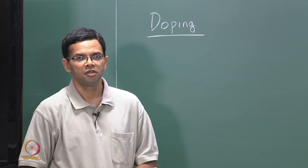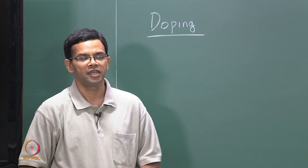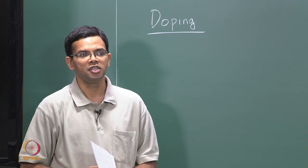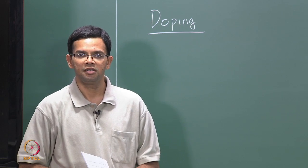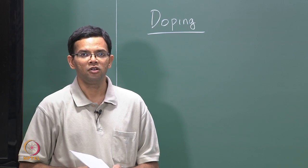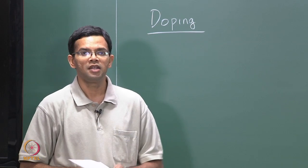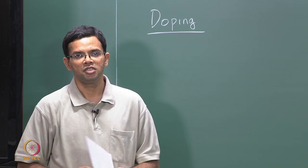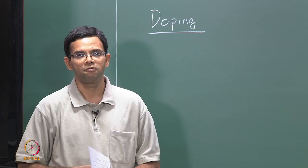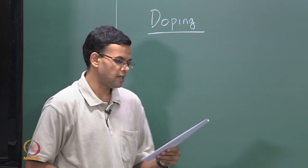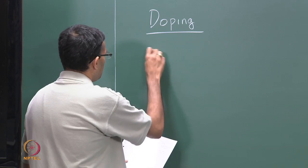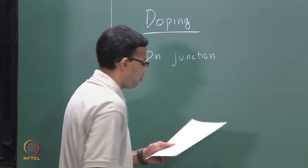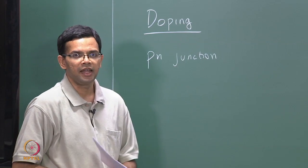Doping is important because in the case of an extrinsic semiconductor, where we add a specific amount of impurities or dopants to your silicon, you can precisely control the electronic properties. In the case of devices, we always want to form junctions, and these junctions are between differently doped materials. For example, the simplest thing is your p-n junction, formed between a p-type and an n-type material.